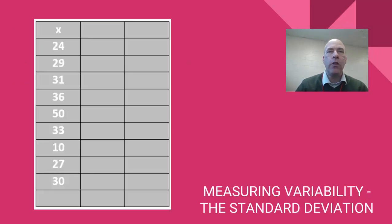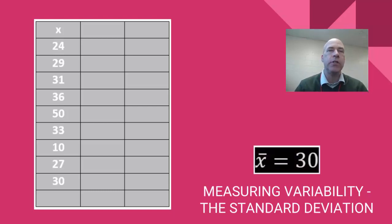So here's how we do it. We're going to start by taking all the numbers and listing them in a table. They don't have to be in order. And individually we want to think about how far each of these data points are above or below the average which was 30.